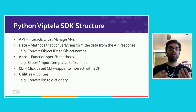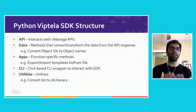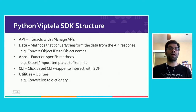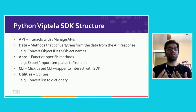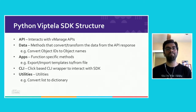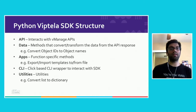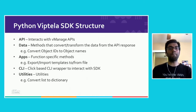From a developer standpoint, the most common directories you'd want to look at are the API directory — to see the raw vManage APIs and their functions — and the CLI directory, to see how the click-based CLI wrapper is implemented. The data and apps directories are where the core logic for managing templates, policies, and variables lives.